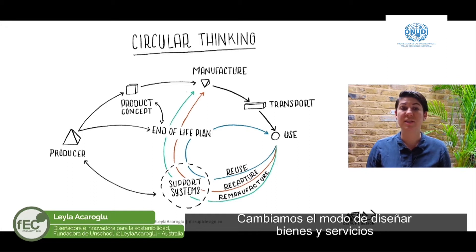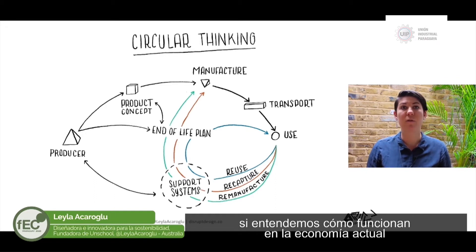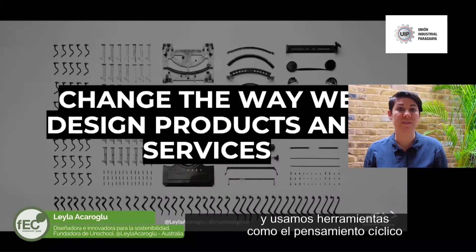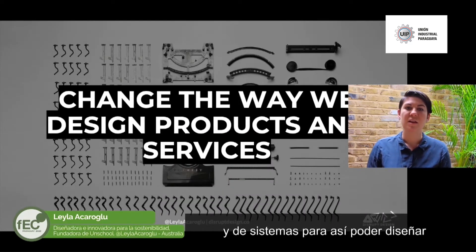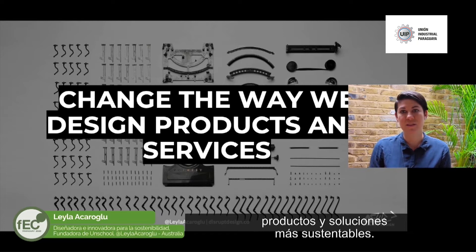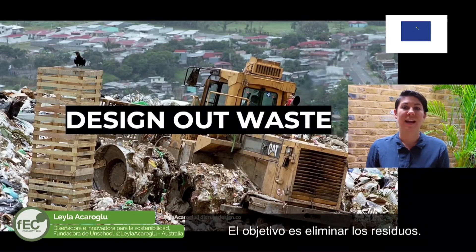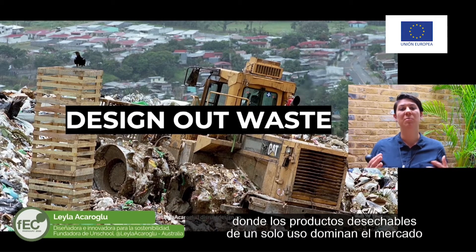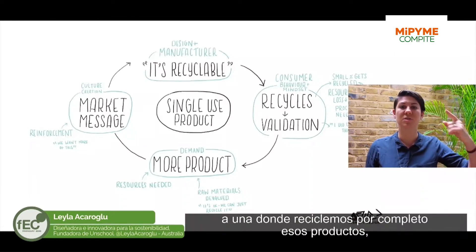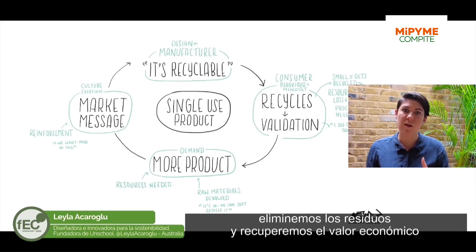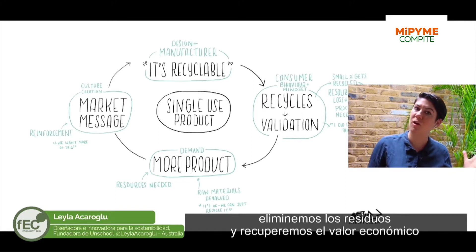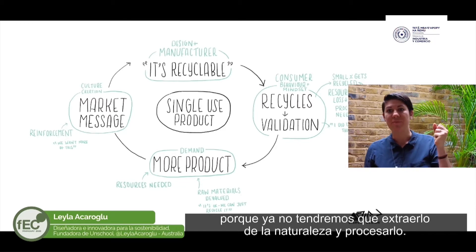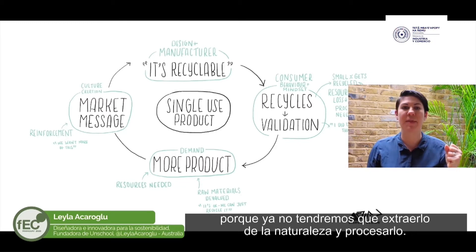We're changing the way we design goods and services by understanding how they work within the current economy, using tools such as lifecycle thinking and systems thinking to design more sustainable products and business solutions. The goal here is to design out waste. We want to figure out how to move from this linear economy — where single-use disposable products dominate the marketplace — to ones where we are cycling those resources through and through, so that ultimately we have limited waste but also regained economic value because we are no longer having to do extraction and processing from the natural world.